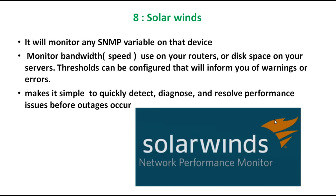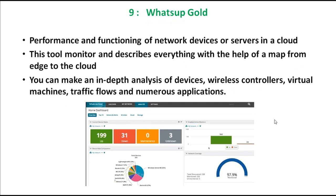SolarWinds is a software that checks the performance of your network and gives you whole detailed information. The next one is called WhatsUp Gold. It checks the performance and functions of network devices or servers in a cloud. This tool monitors and describes everything with the help of a map from edge to the cloud — you can do an in-depth analysis of devices, wireless controllers, virtual machines, traffic flows, and numerous applications.